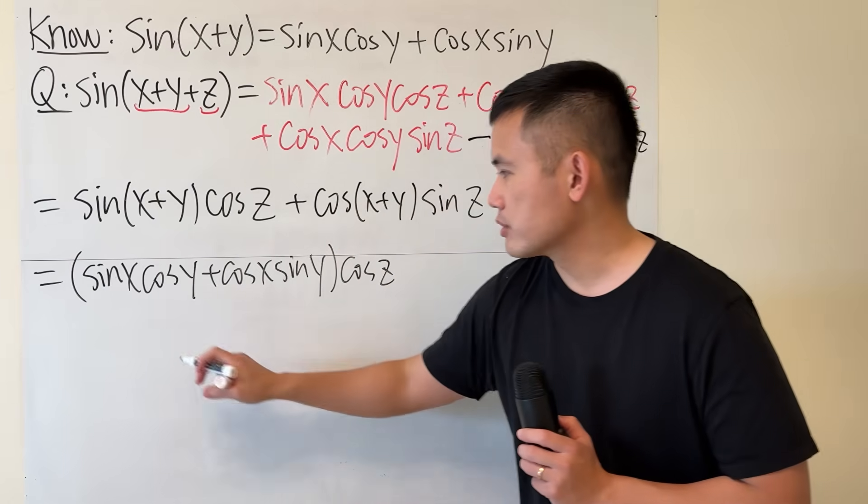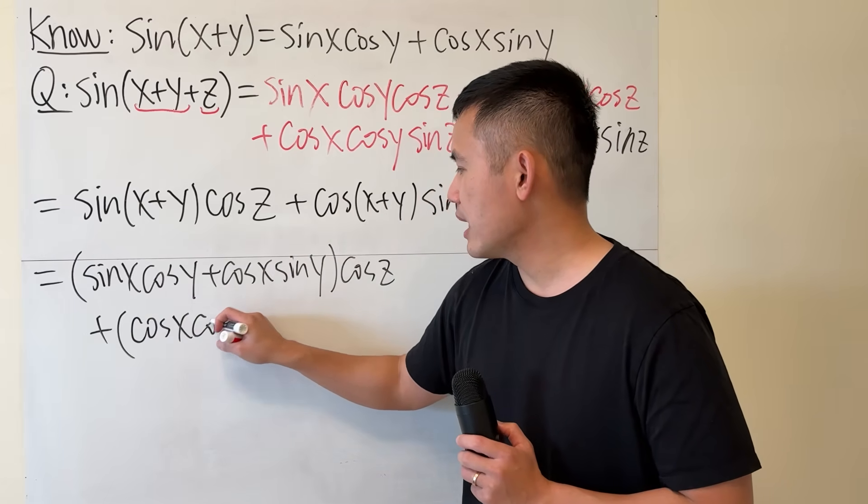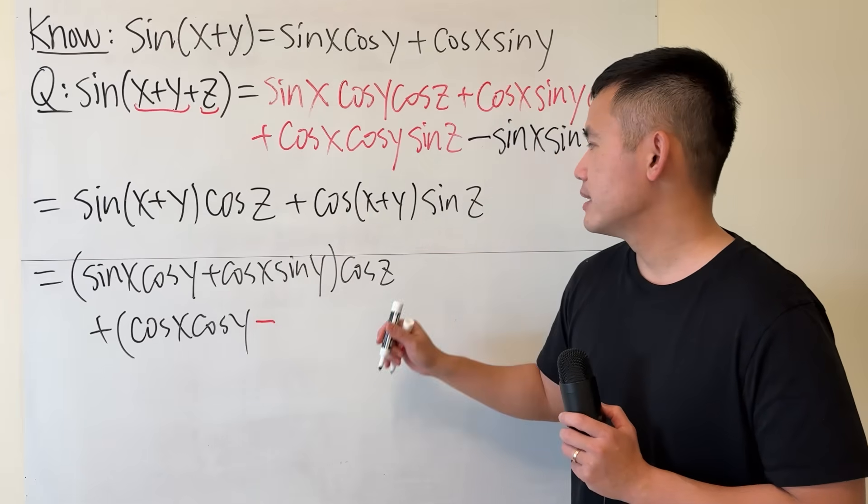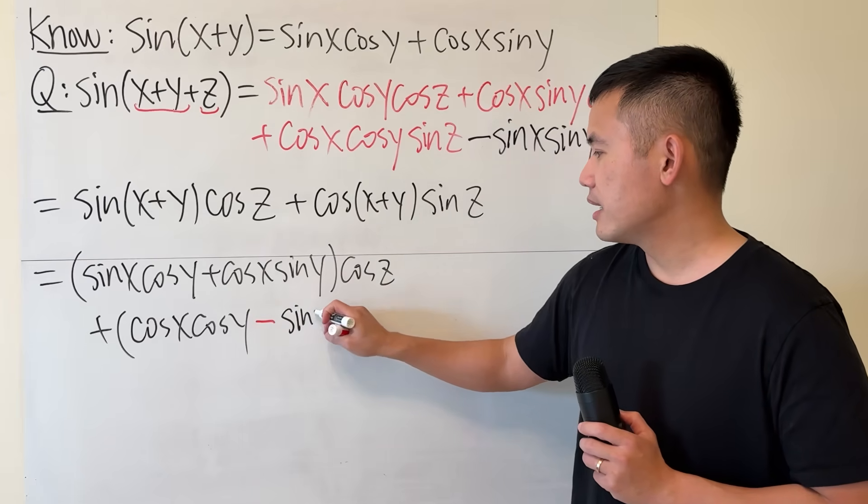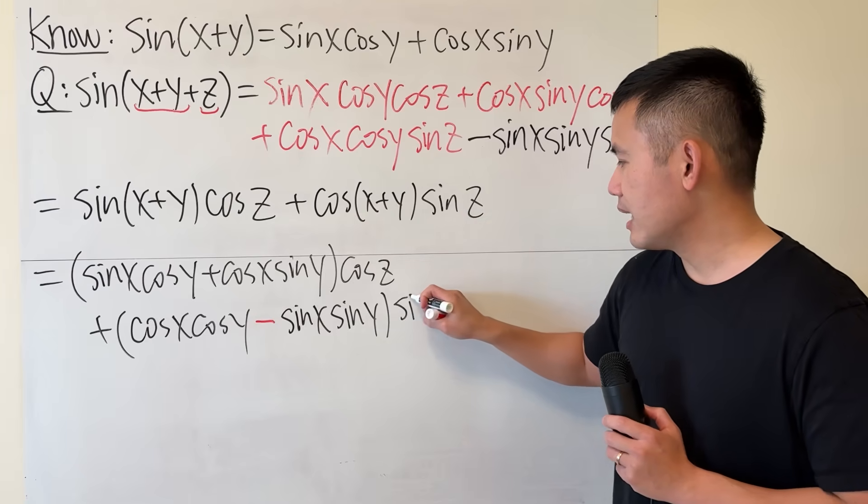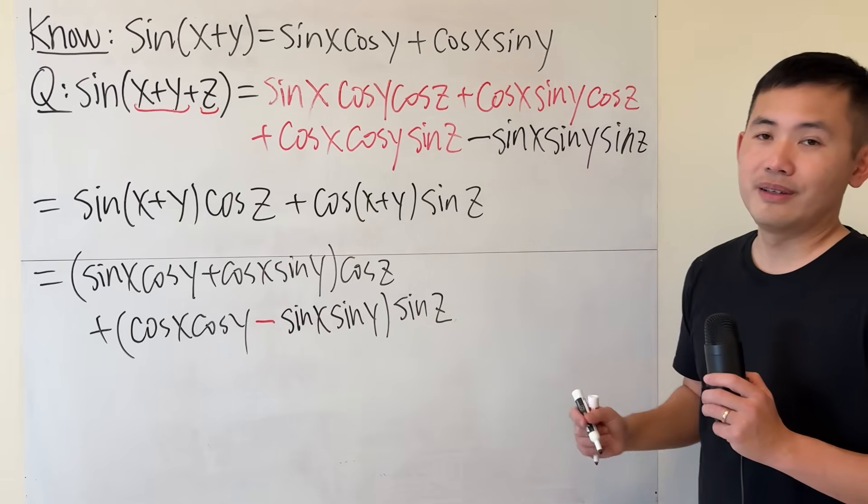And then for cosine, remember, even though it's an adding in between, it's going to be a subtraction. So this will give us cosine x cosine y and then subtract, and then sine x sine y, and then times sine z.